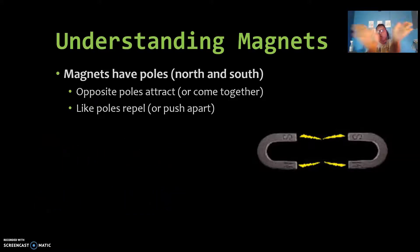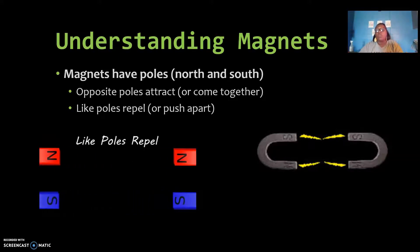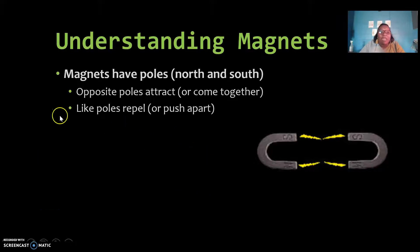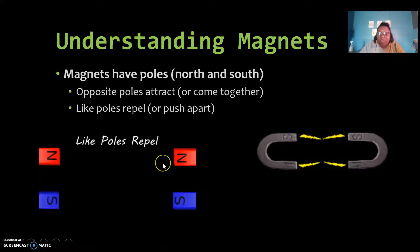Like poles will repel one another. They push apart. And we see an example here of where the poles are attracting. The north and south poles are attracting. And where the like poles are repelling. North and north don't like each other, so they're pushing away from one another. That's what that word repel means, push apart.